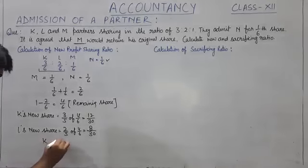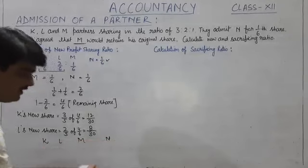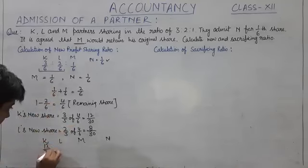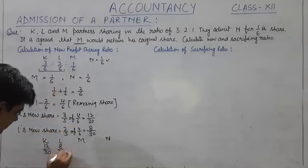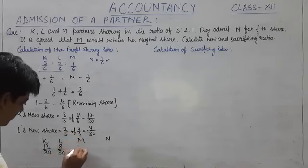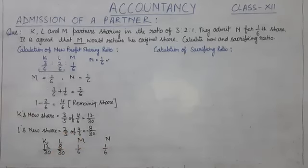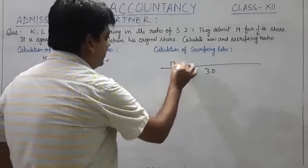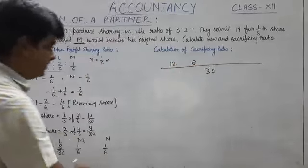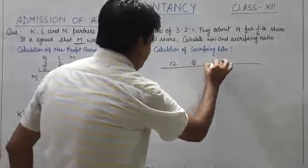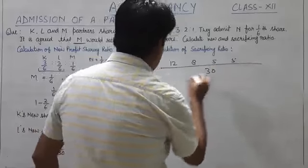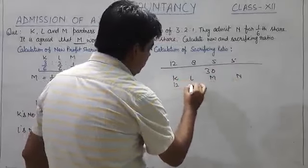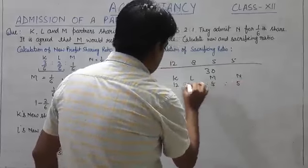Now we will calculate their new profit sharing ratio: K, L, M, and N. K's share is 12 upon 30, L's share is 8 upon 30, M's share is 1/6 and N's share will be 1/6. We will take LCM, M's share will come 30, so 12 will come as it is, 8 will also come as it is, 6/30 so 5, and again 6/30 so 5. K, L, M, and N, their new profit sharing ratio will be 12:8:5:5.